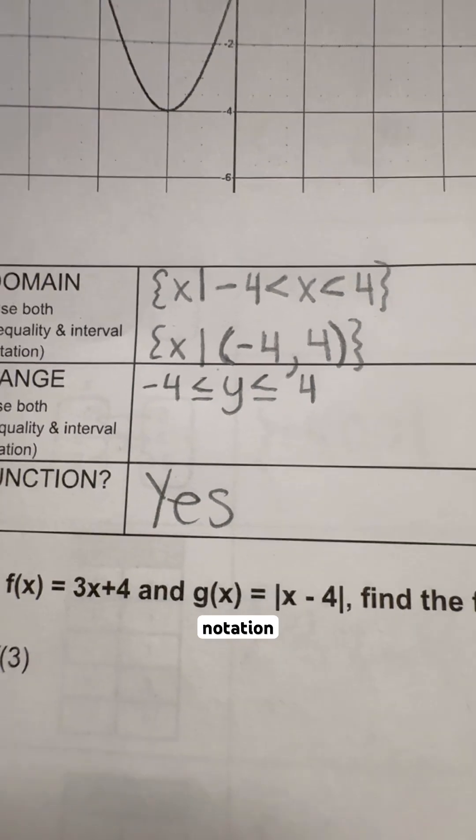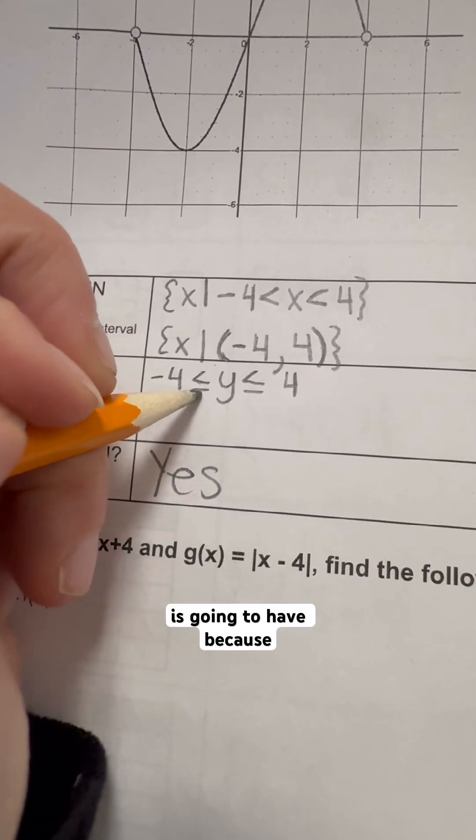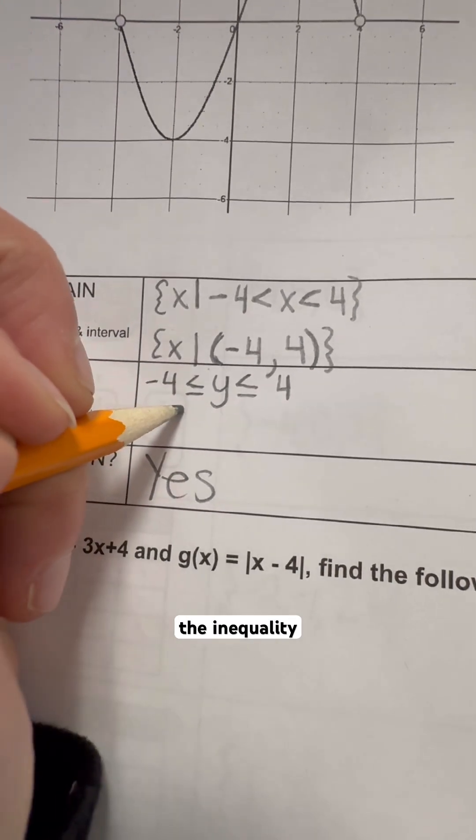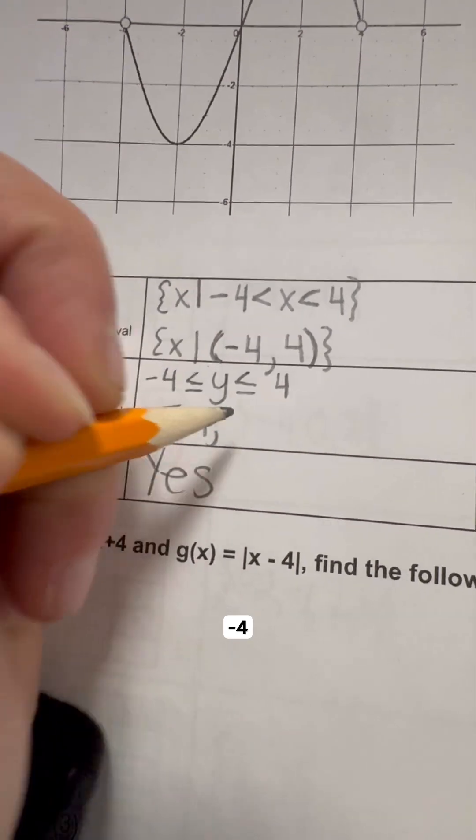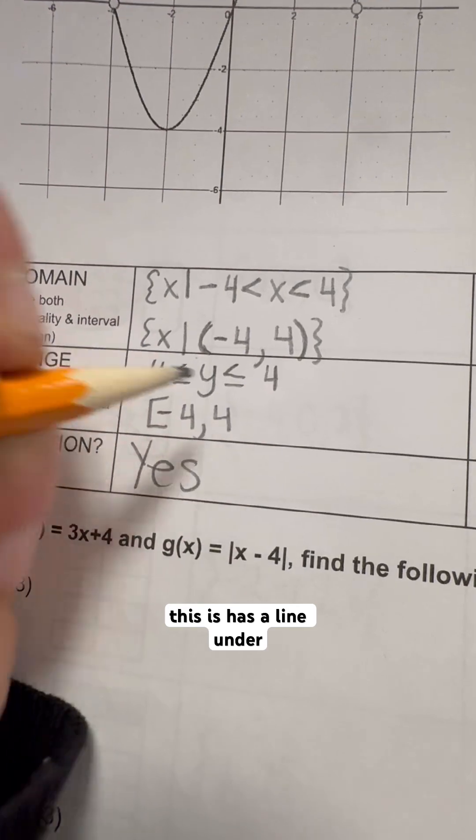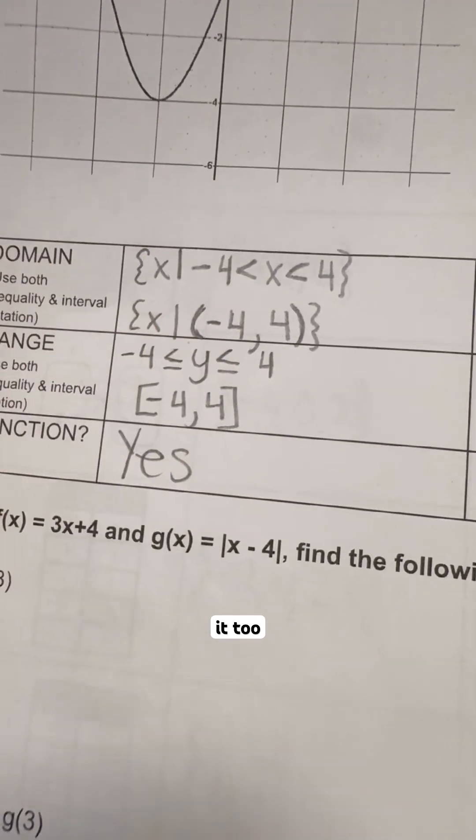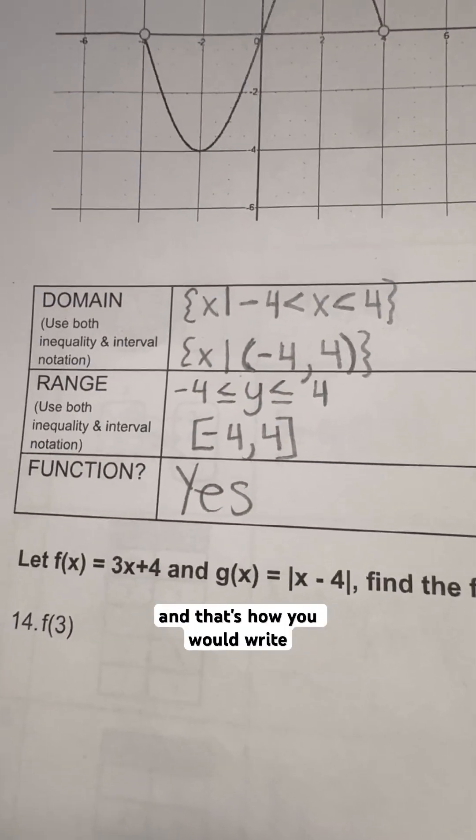And then when we go to do our interval notation, because these are lines underneath the inequality symbols, we are going to do hard brackets on negative four. As well, because this has a line under it too on that four. And that's how you would write this one.